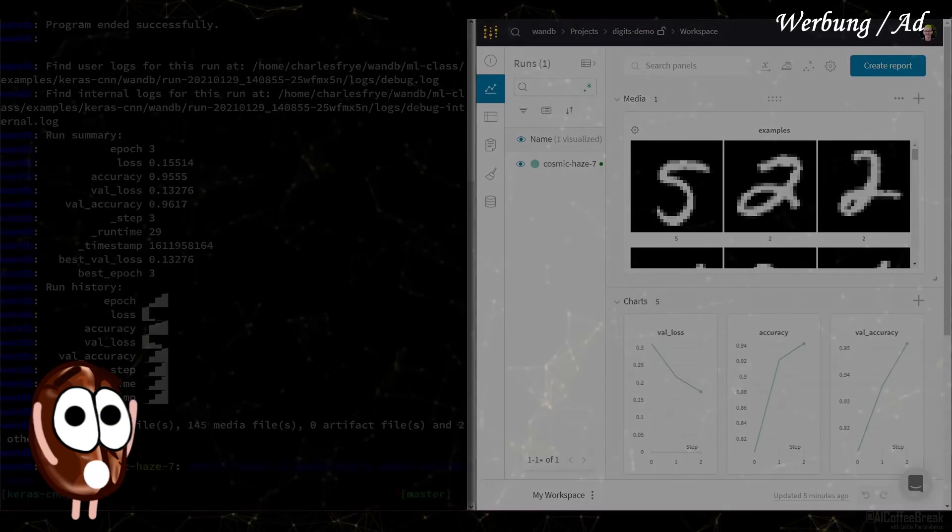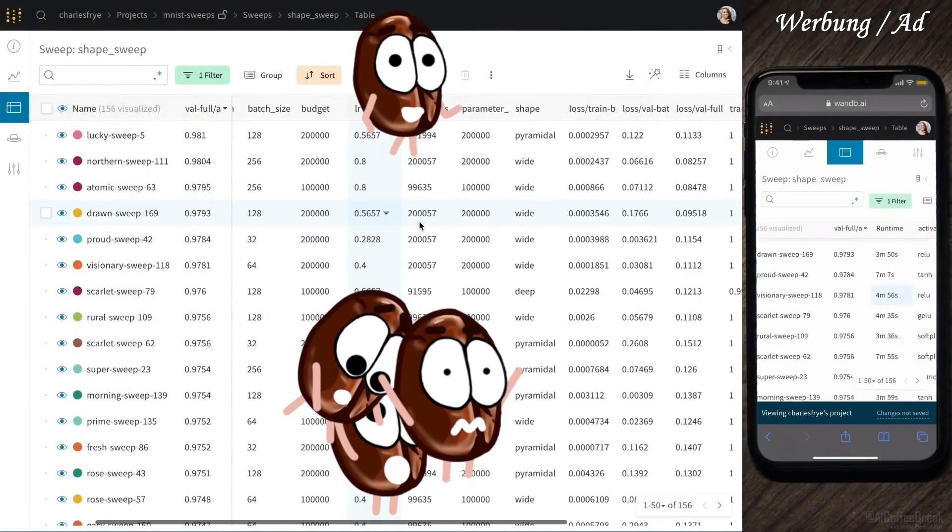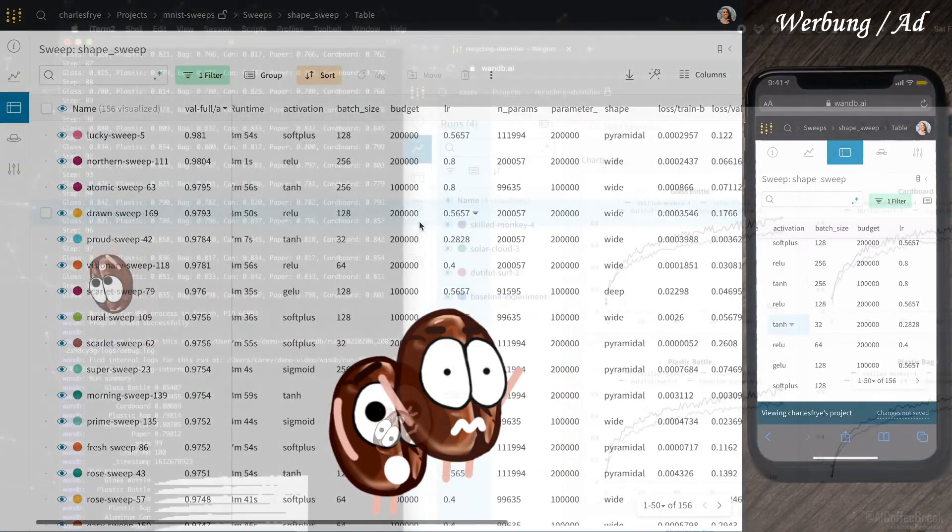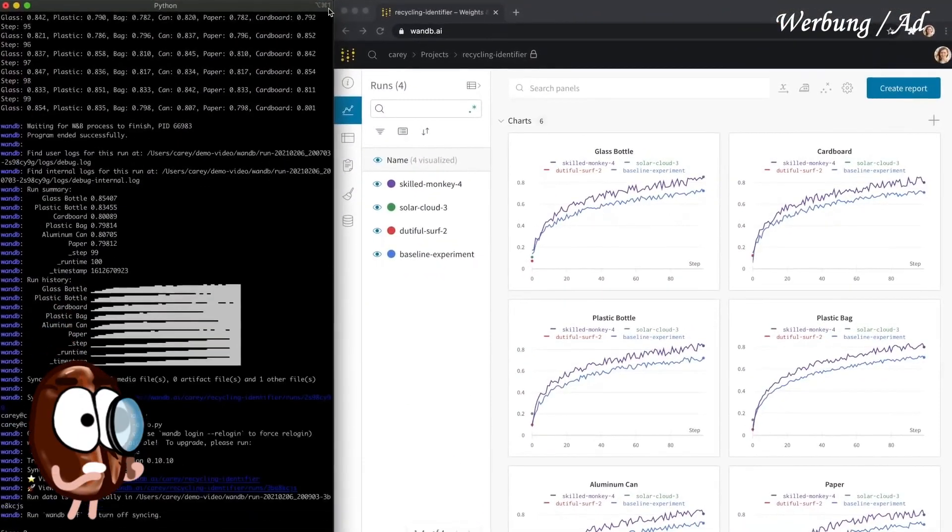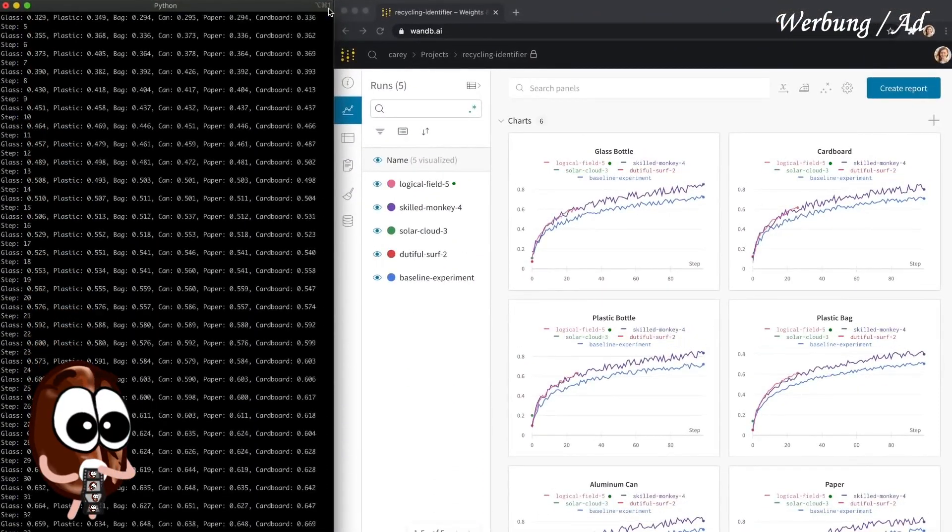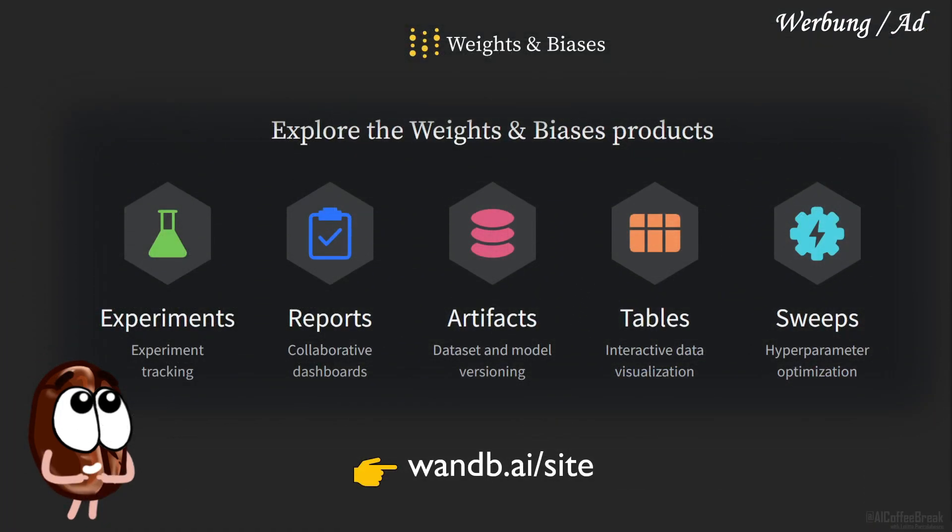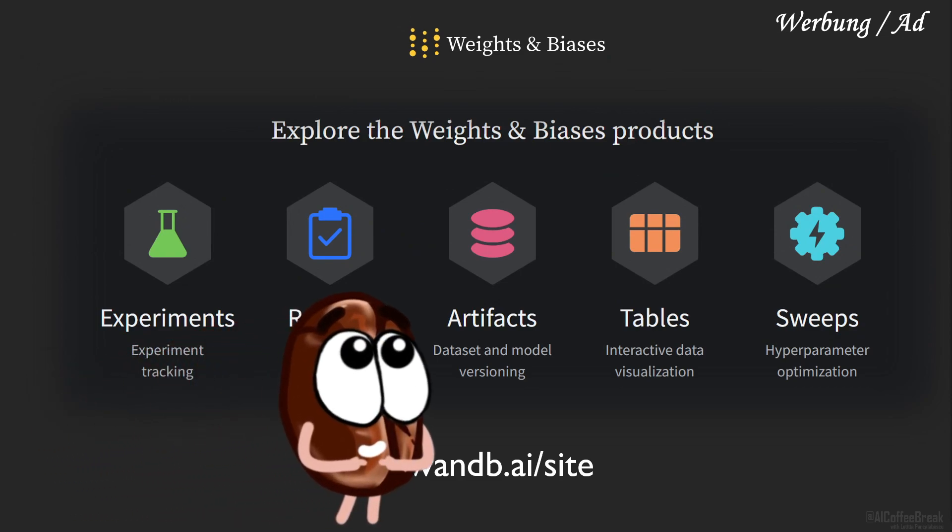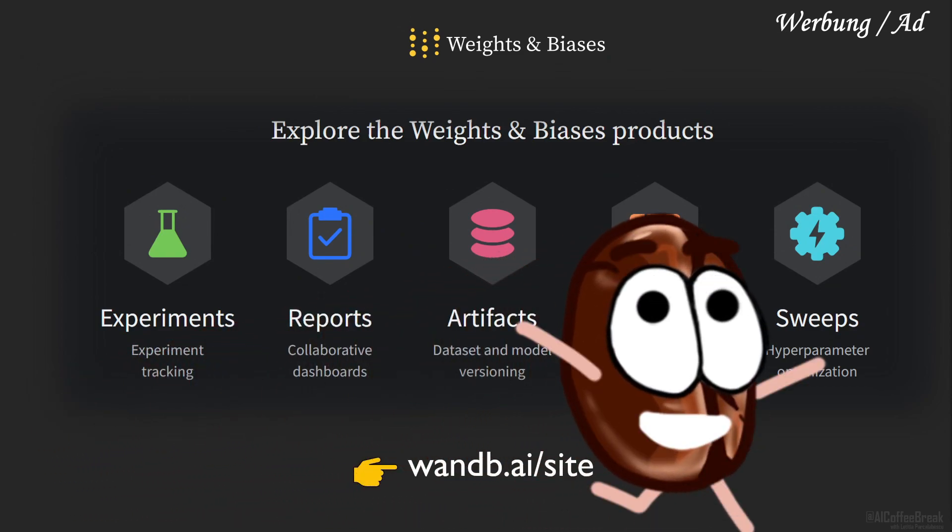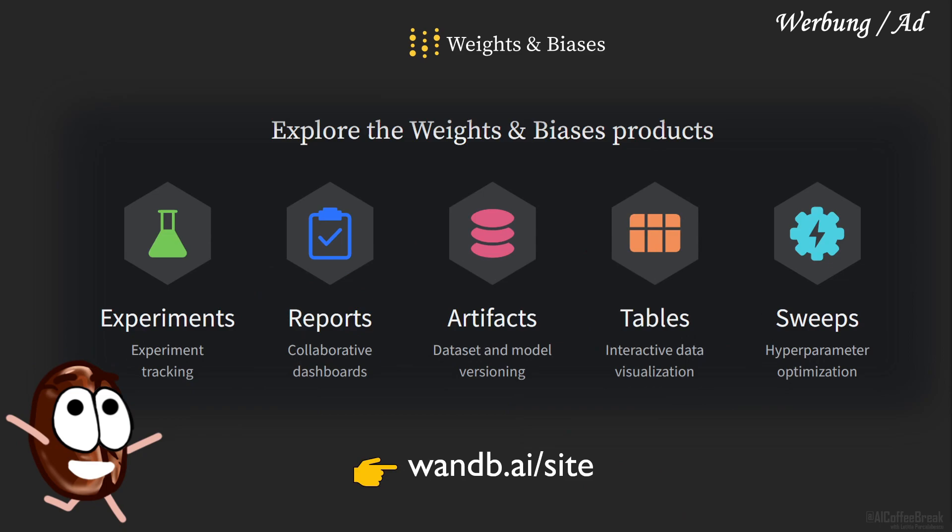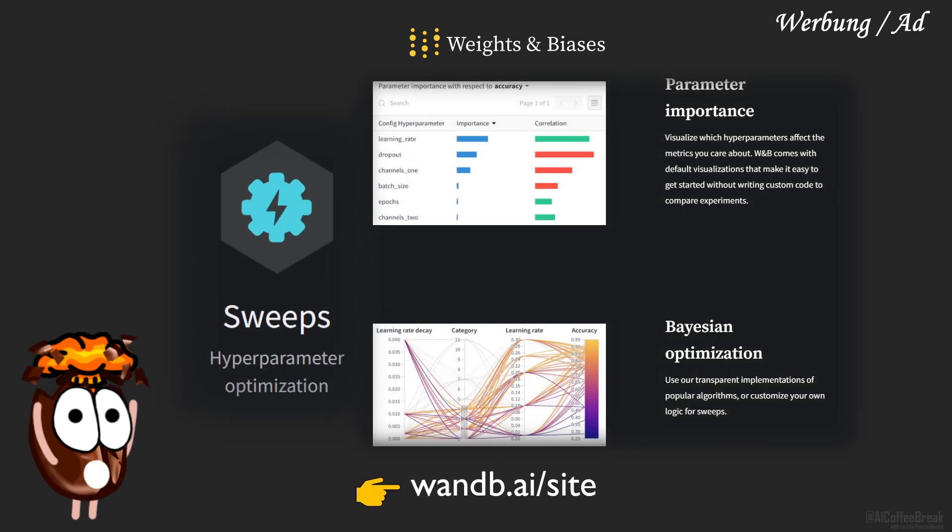If you haven't heard of Weights and Biases, then surely you are living under a pile of coffee beans. With Weights and Biases, you can track your experiments and have beautiful plots at the same time, reproduce your models, and optimize hyperparameters like a pro with sweeps. Say goodbye to your good old uninformed grid search and welcome their integrated Bayesian optimization.